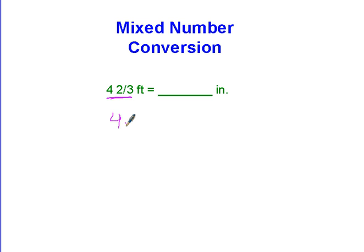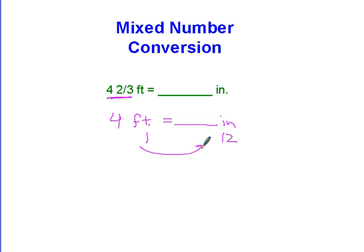What if this just said four feet equals blank inches? Most of you know probably that there are 12 inches in one foot. So to get this number over here in the blank, I'm going to need to multiply by 12, because 1 times 12 is 12. So I would do 4 times 12, which would be 48.